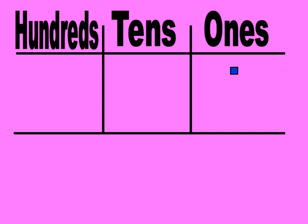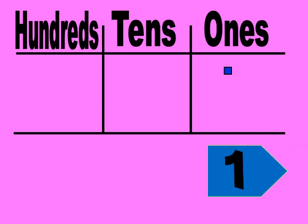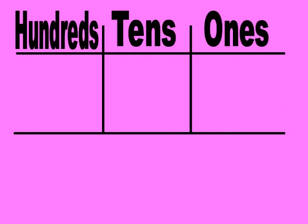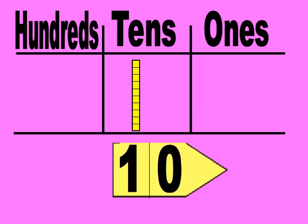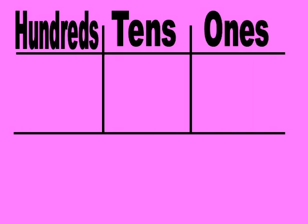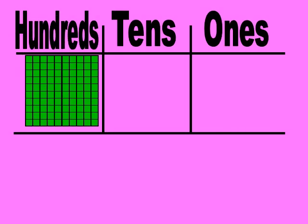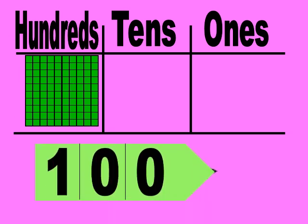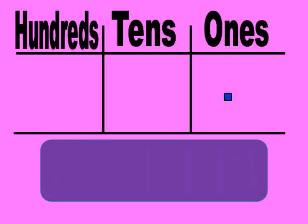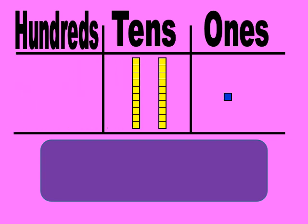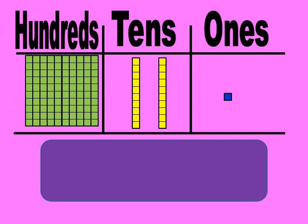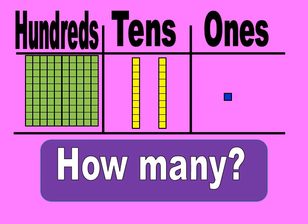Now we see 1 cube of 1 making the number 1. Then we see 10 cubes of 10 making a rod of 10, representing the number 10. Then we see 100 cubes of 100 making a flat of 100, called the number 100. So, with 1 cube of 1, 2 rods of 10, and 1 flat of 100, the number is 121.